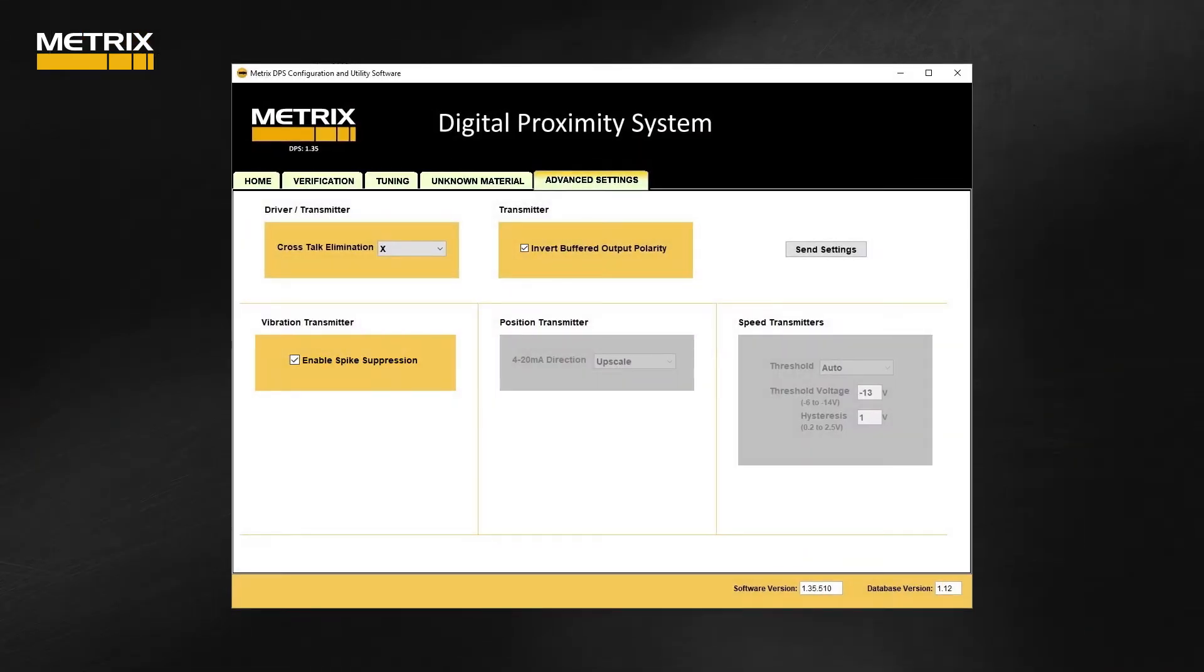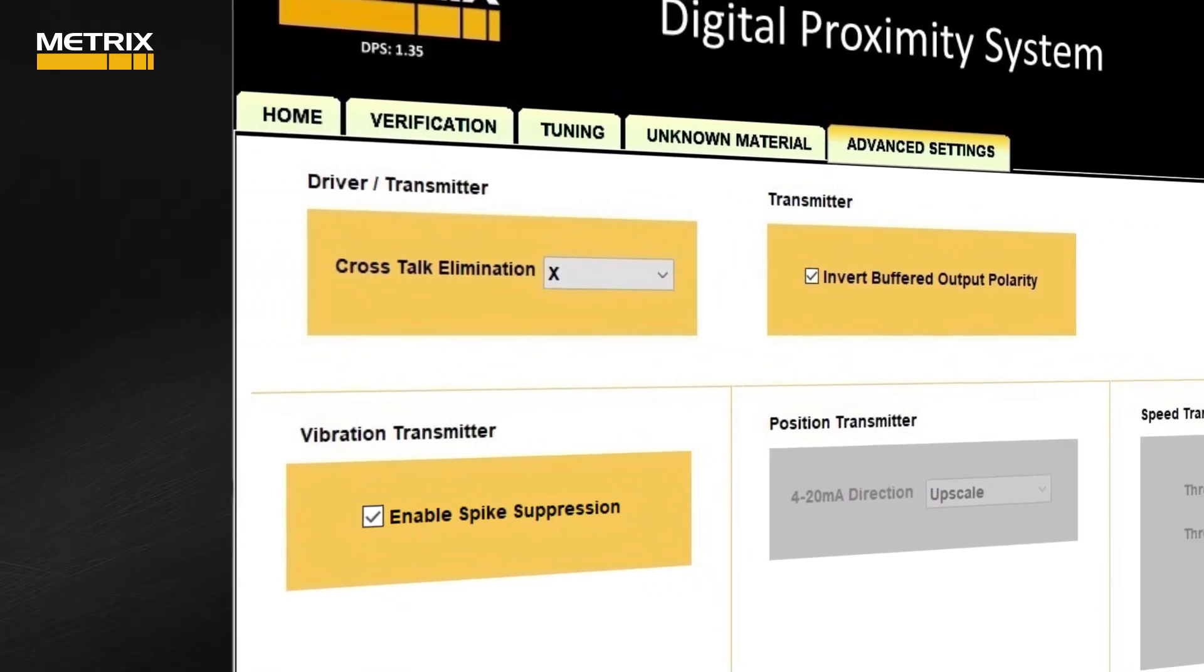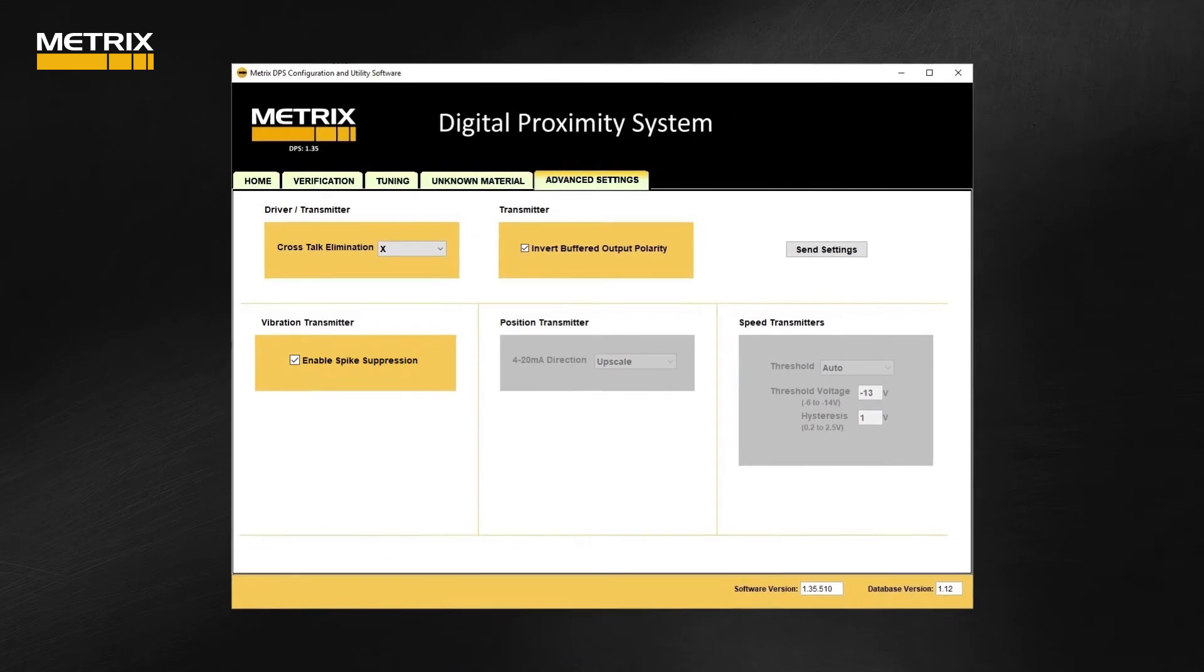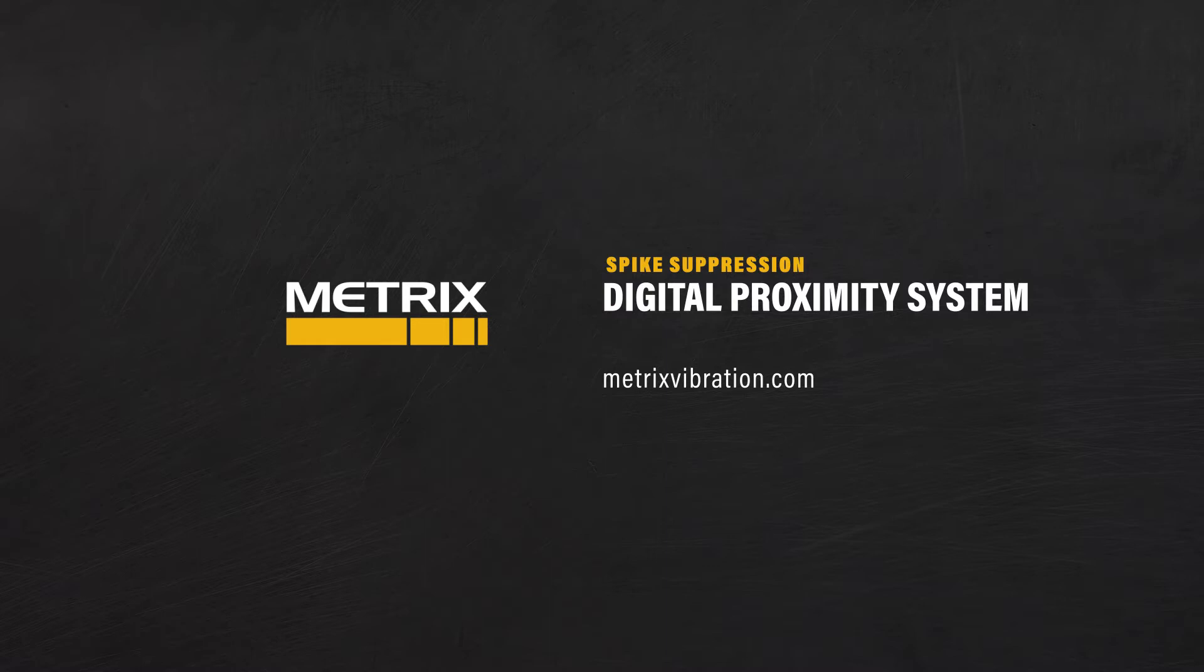The spike suppression feature can be accessible through the advanced settings in the Metrix DPS configuration and utility software. Please refer to the user manual for more information. Spike suppression is only available through the patented Metrix Digital Proximity System.